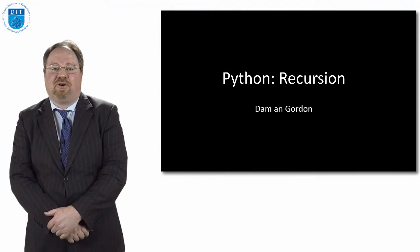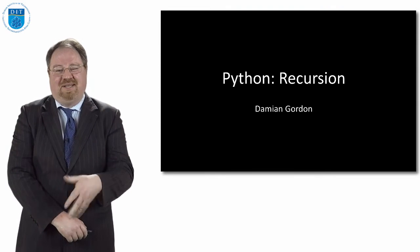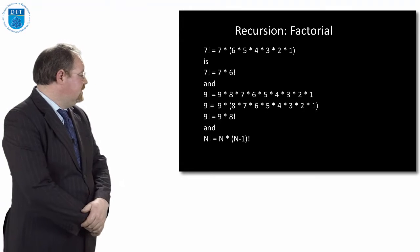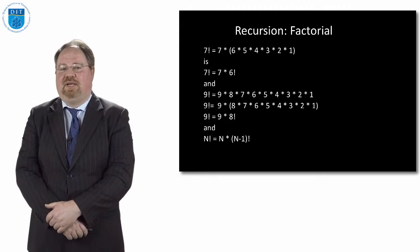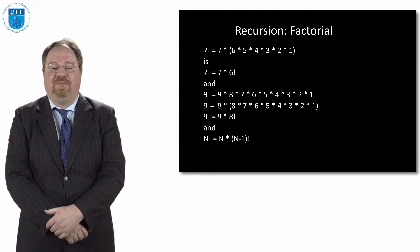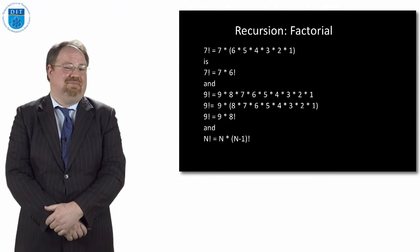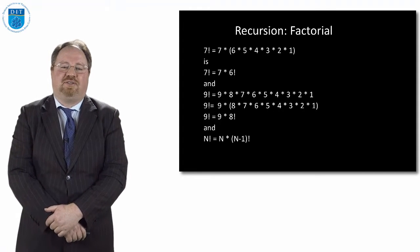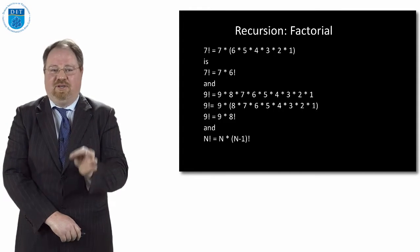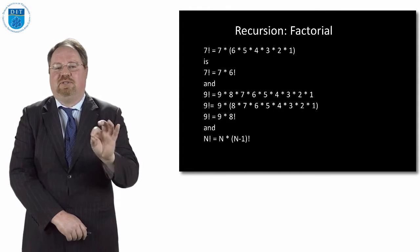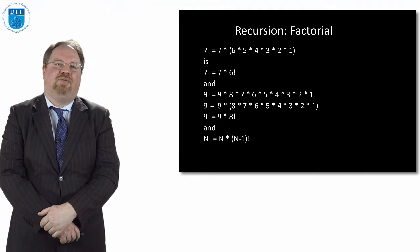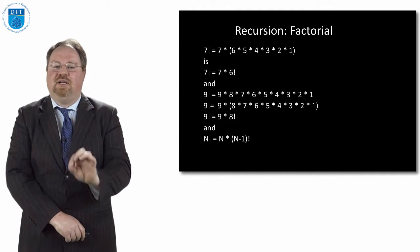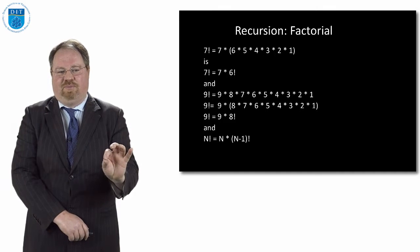We'll recall what recursion means: a module or method calls itself. The simple example I always go back to is factorial. If we pick 4 factorial, we know 4 factorial is 4 multiplied by 3 multiplied by 2 multiplied by 1. And 3 factorial is 3 multiplied by 2 multiplied by 1.